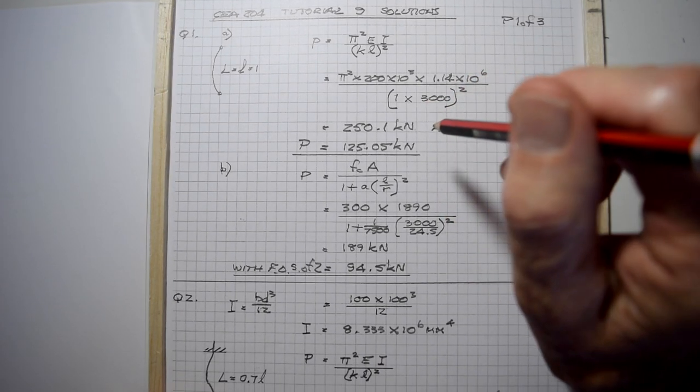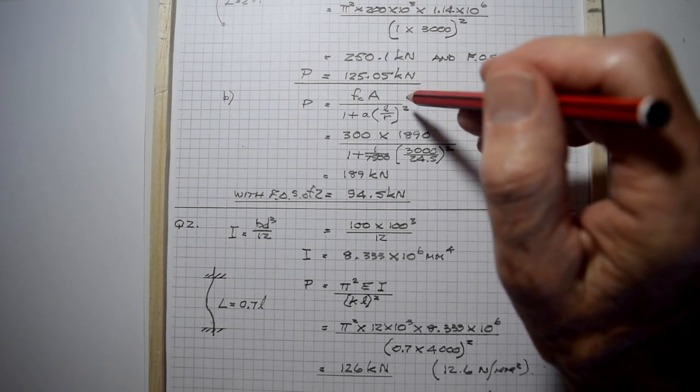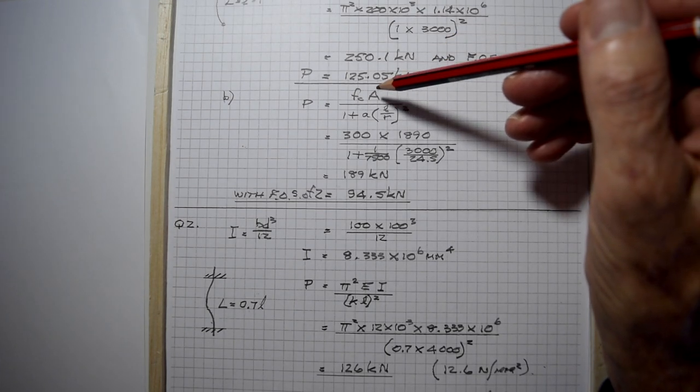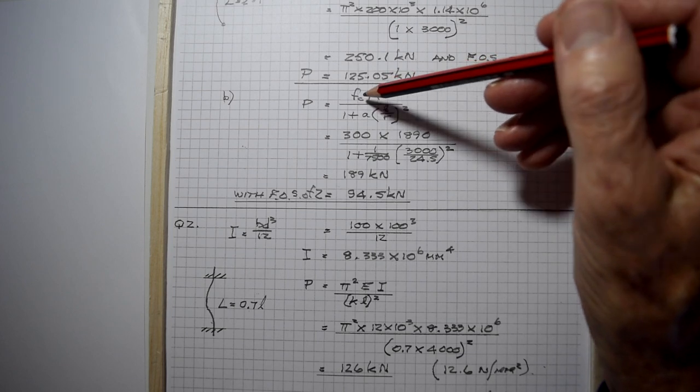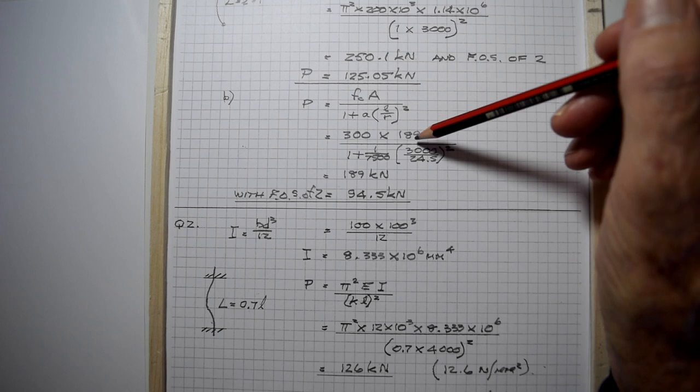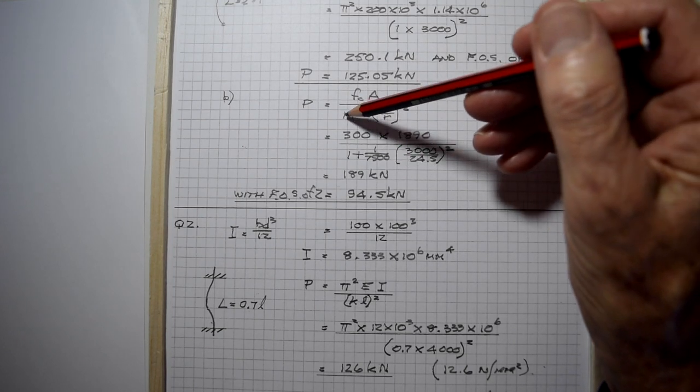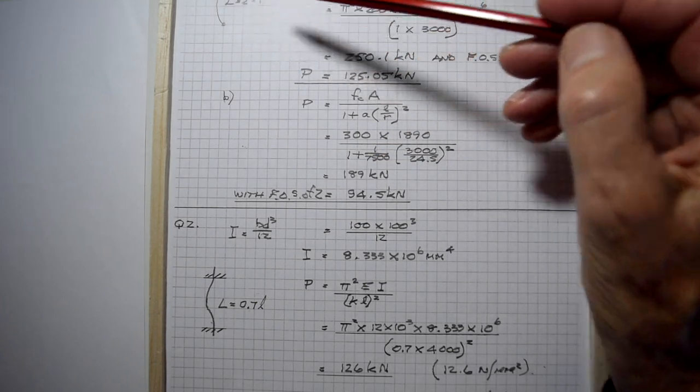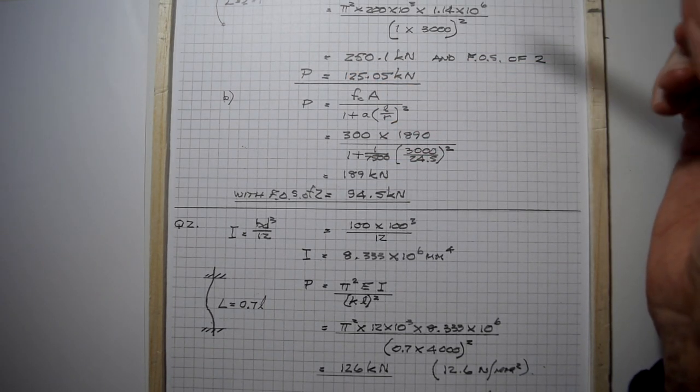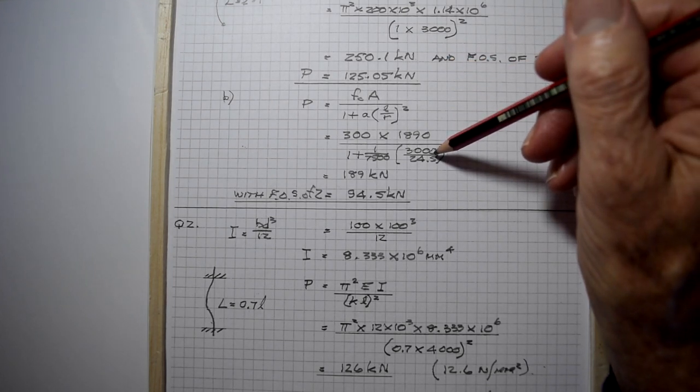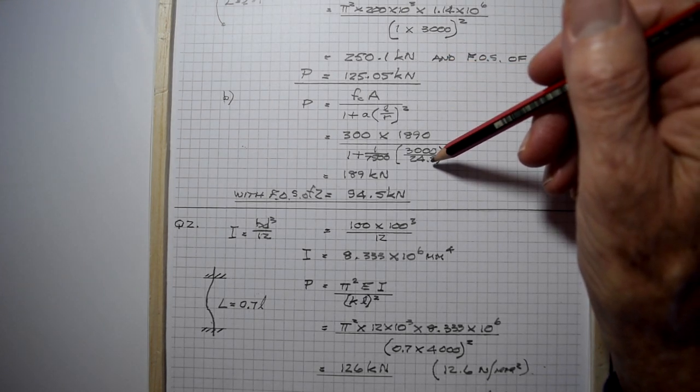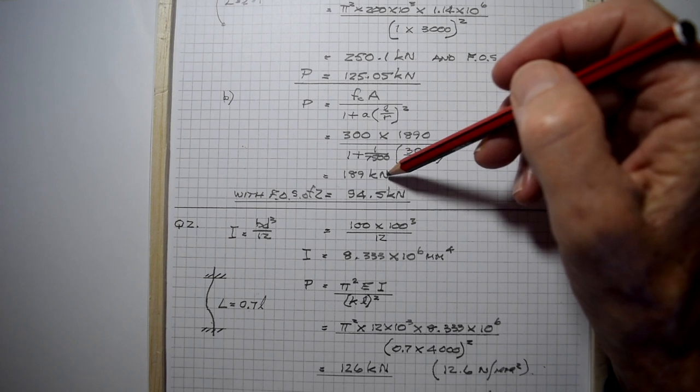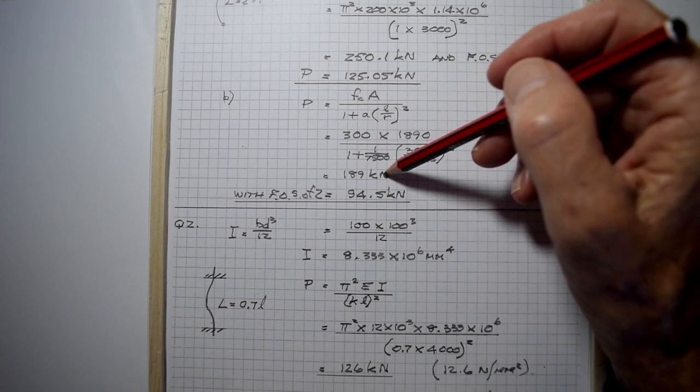Looking at part B using the Rankin-Perry-Robertson formula. It's straightforward similar to the problem in the lecture. Fc is the stress in steel, A is the area of section, one plus factor little a for fixity conditions which is pinned at both ends, one over 7500 multiplied by length divided by radius of gyration ry all squared gives a total load of 189 kilonewtons.